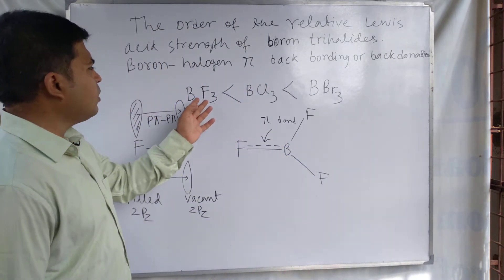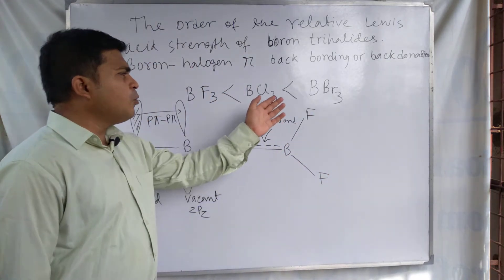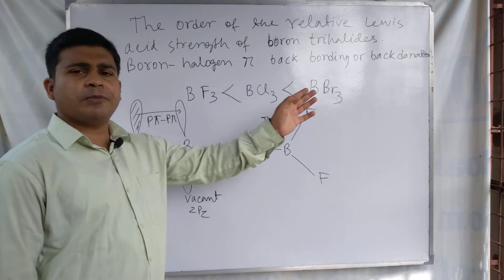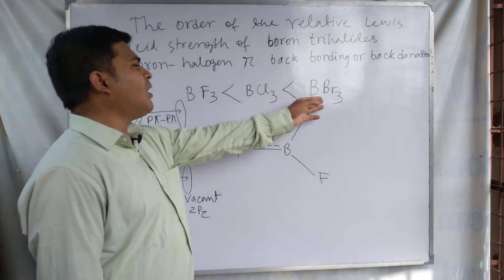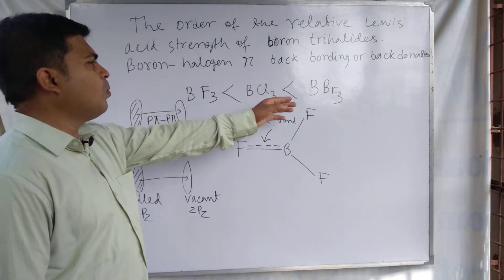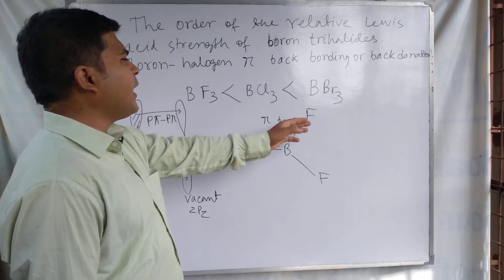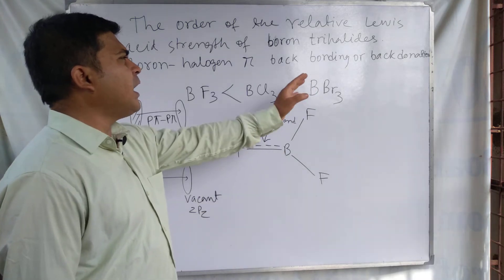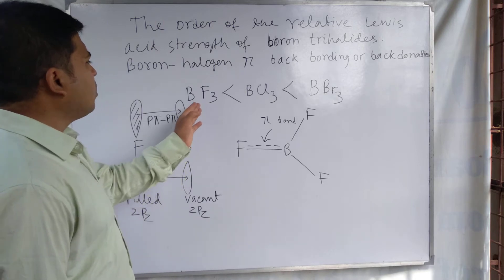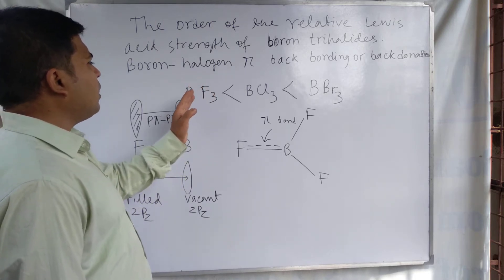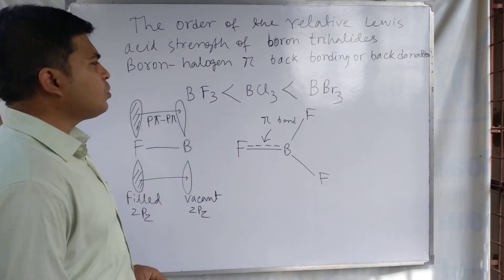BF3, BCl3, and BBr3 can all accept a pair of electrons, so these are called Lewis acids. However, their Lewis acid strengths are not the same. BBr3 is the most acidic — having the most Lewis acid character — while BF3 has the least Lewis acid strength.